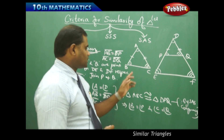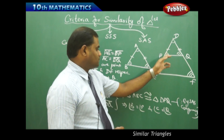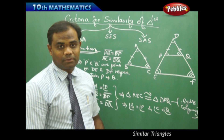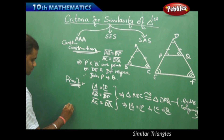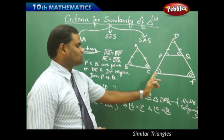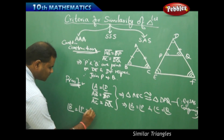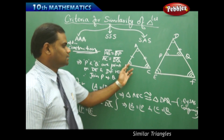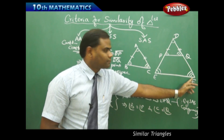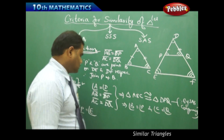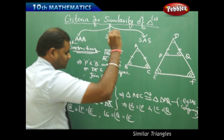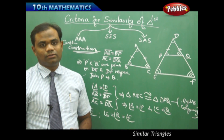Connecting this: we know angle B equals angle P (from congruency) and angle B equals angle E (given). Therefore angle P equals angle E by the transitivity property. Similarly, angle C equals angle Q (from congruency) and angle C equals angle F (given), so angle Q equals angle F by transitivity.